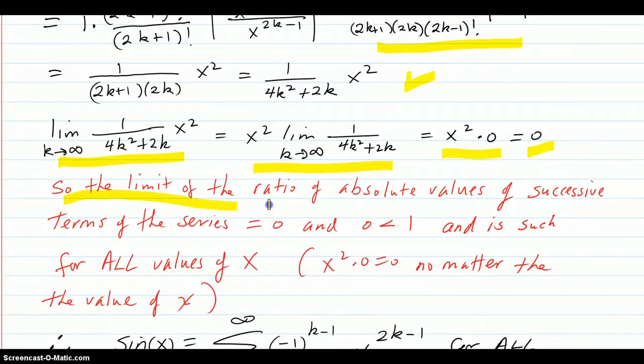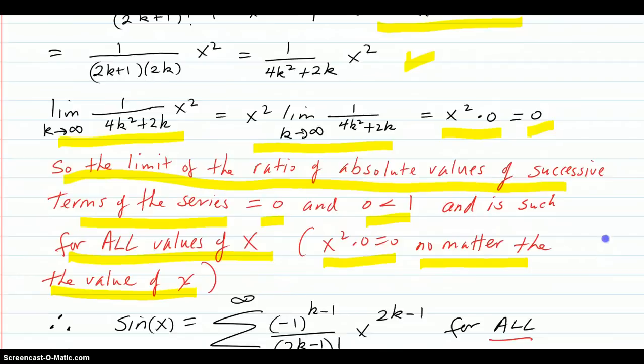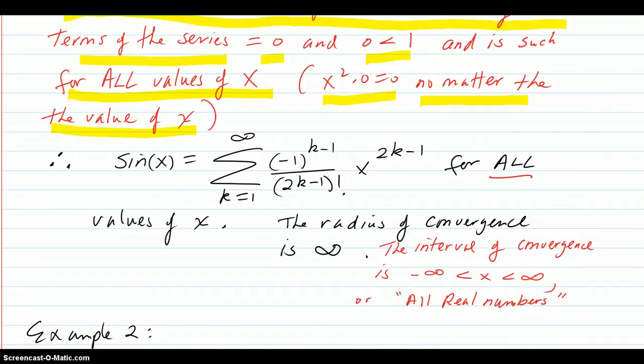So the limit of the ratio of absolute values of successive terms of the series equals zero, and zero is less than one in the ratio test, and is such for all values of x because x squared times zero equals zero no matter what the value of x. Therefore, sine x actually does equal this series for all values of x, so that equals is solid. The radius of convergence is infinity. The interval of convergence is negative infinity to infinity, or all real numbers.